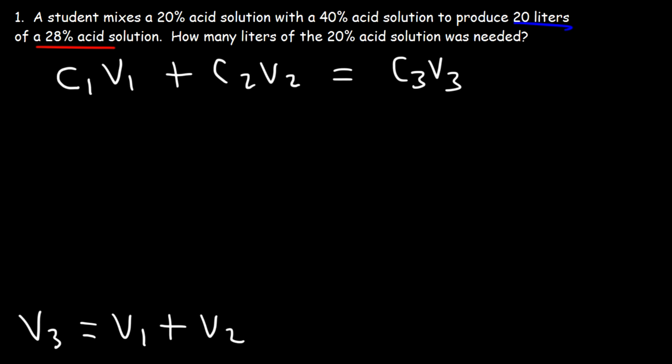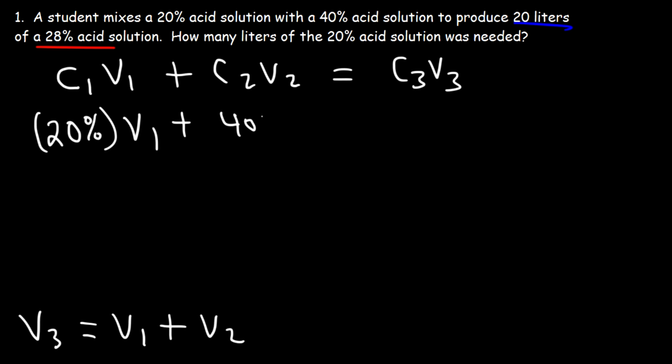So let's plug in the numbers we have. The concentration of the first solution is 20%. Because C1, C2, and C3 will all be in terms of percentage, you don't need to convert to a decimal value — if you use 20 or 0.2, you will still get the same answer. We don't know the value of V1; V1 is what we're looking for — the volume of the 20% acid solution. C2, the second concentration, is 40%. We don't know V2. C3 is the concentration of the mixture, that's 28%, and we do have V3, the total volume, which is 20 liters.